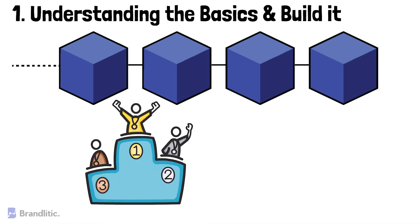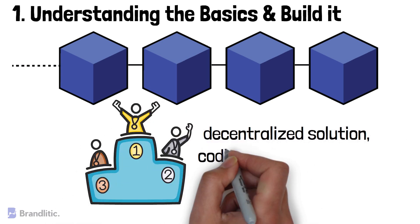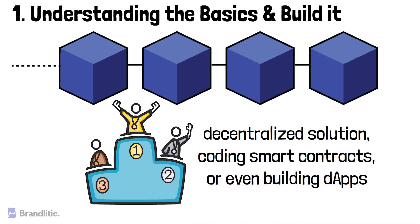Coding smart contracts, or even building decentralized apps. If you are completely new to programming, then you need to start with Python or JavaScript. Once you are comfortable with any of the programming languages, then you can start learning Solidity, which is a programming language used specifically for developing smart contracts.